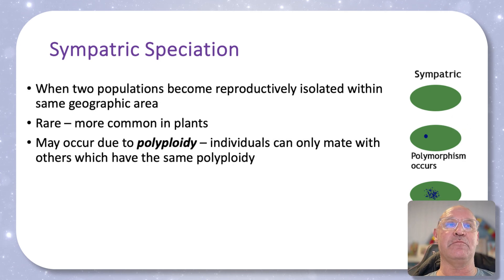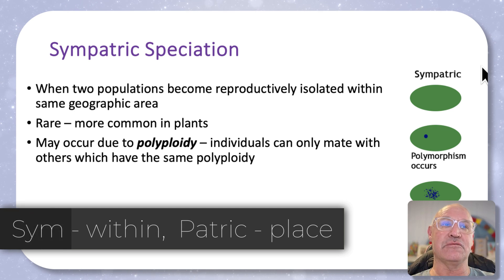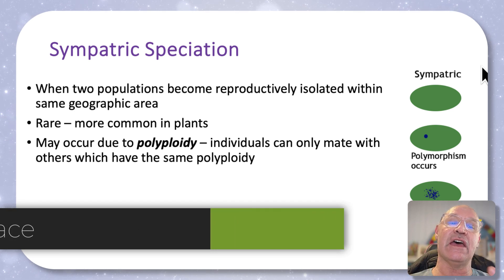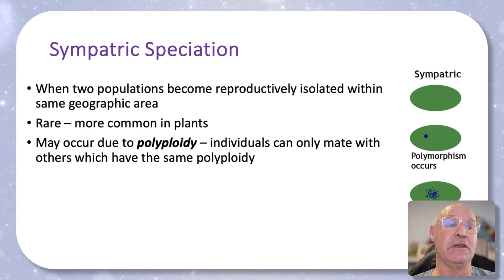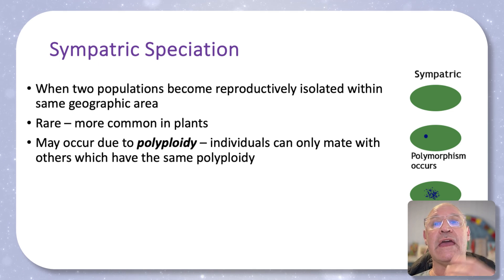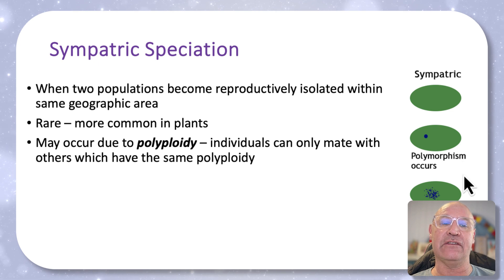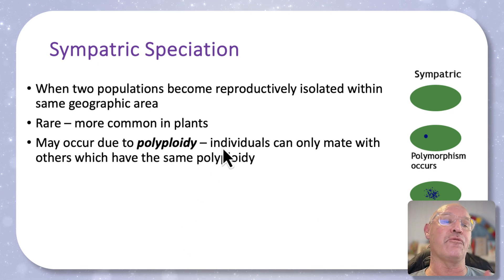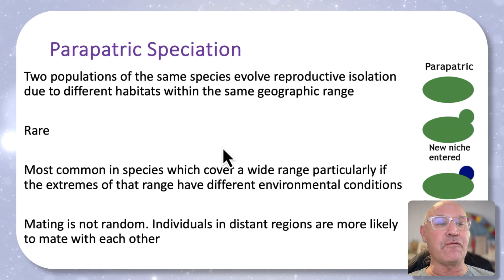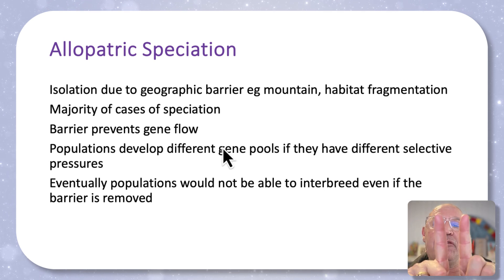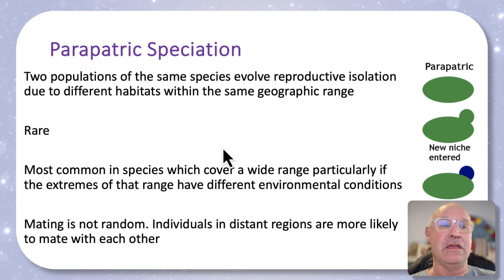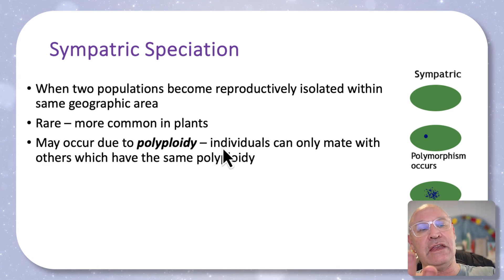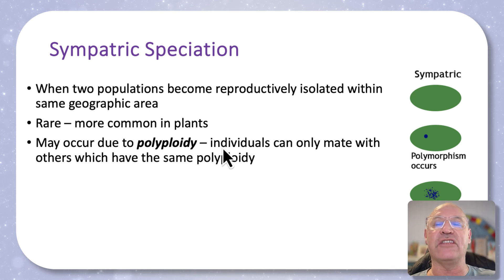Lastly, we've got sympatric speciation. This occurs within a geographical area with the same environmental factors. It occurs when polyploidy or aneuploidy occurs, so organisms are only able to successfully mate with other individuals that have the same ploidy. This is quite rare and mostly only happens in plants. Allopatric is the most common — think of the double-L as being a physical barrier. Parapatric means 'next to' and sympatric means 'within,' and this only occurs when aneuploidy occurs.